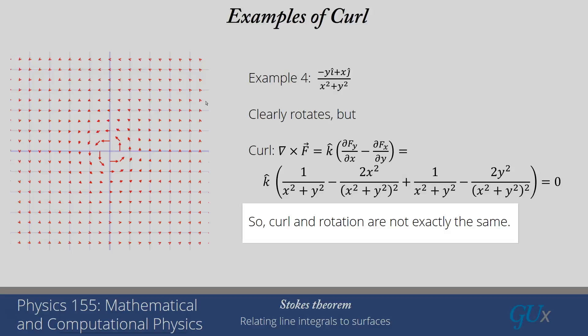So curl and rotation are not exactly the same, although you'll hear many textbooks saying they are effectively the same. Nevertheless, it is a reasonably good rule of thumb for most vector fields that if you see a rotation, it probably has a non-zero curl, and if you don't see a rotation, it probably has a zero curl. That is all we have for this lecture.